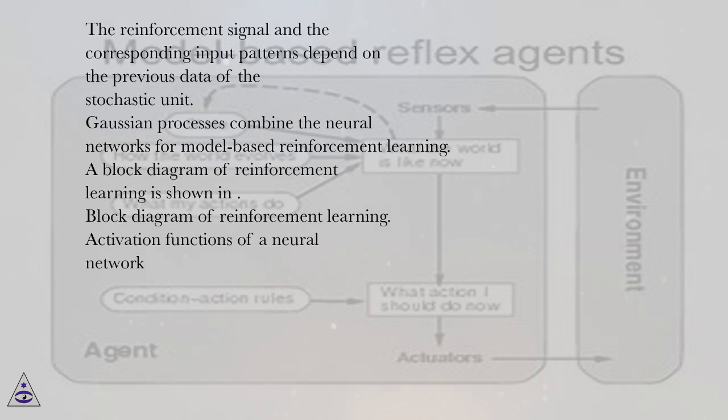The reinforcement signal and the corresponding input patterns depend on the previous data of the stochastic unit. Gaussian processes combine the neural networks for model-based reinforcement learning. A block diagram of reinforcement learning is shown in Block diagram of reinforcement learning.